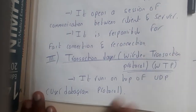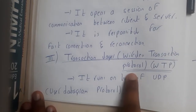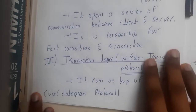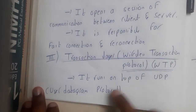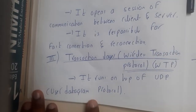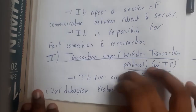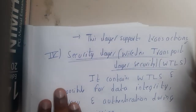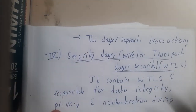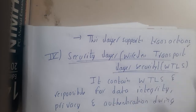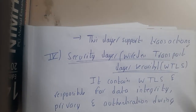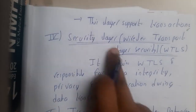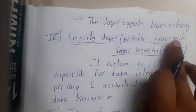The next layer is the transaction layer, which uses WTP — Wireless Transaction Protocol. It runs on top of UDP, the User Datagram Protocol. This layer supports transactions, including ACID properties such as atomicity, which will be discussed in detail in the next lecture in the context of mobile computing.